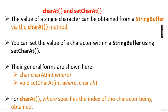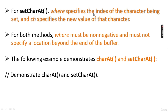You can set the value of a character within a StringBuffer using setCharAt. The general forms are: char charAt(int where) and void setCharAt(int where, char ch). For charAt, where specifies the index of the character being obtained. For setCharAt, where specifies the index of the character being set and ch specifies the new value. For both methods, where must be non-negative and must not specify a location beyond the end of the buffer.